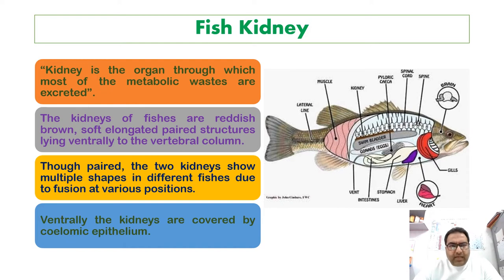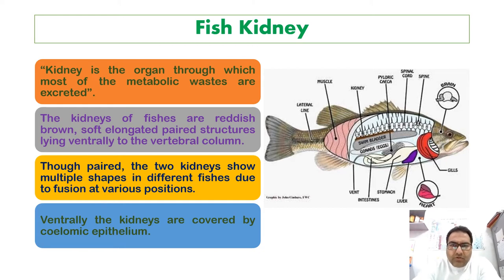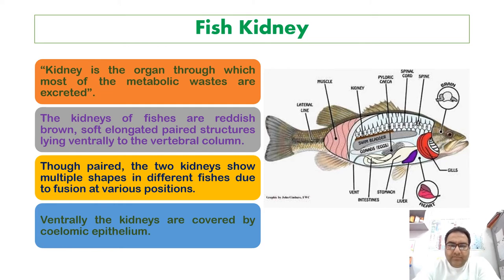Talking about the fish kidneys: the kidney is an organ through which most of the metabolic wastes are excreted. The kidneys of fishes are reddish brown, soft, elongated, paired structures lying ventrally to the vertebral column, and they are involved in the excretion of metabolic waste.